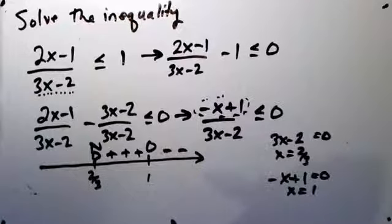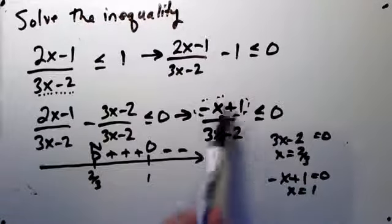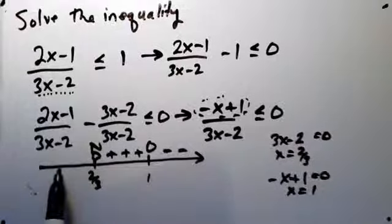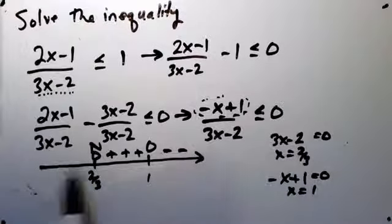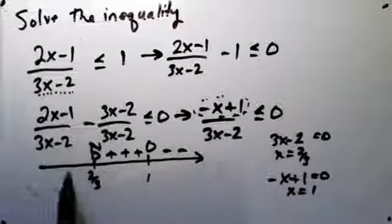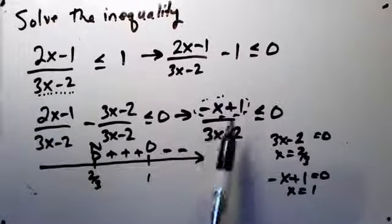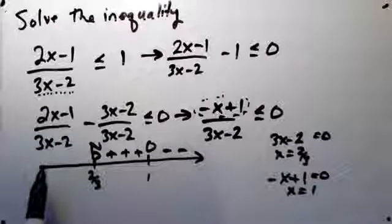Alright, so that's not part of our solution. We want to know where we're less than or equal to zero. Likewise, if I put a number down here, perhaps the easiest one is zero on this sub-interval. If I put in zero for x, I get 1 over minus 2 is negative.